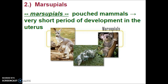Marsupials and monotremes are mostly found in the southern continents of Australia and the island of New Zealand. These branches of mammals became separated once we had some continental shift, and the only American marsupial mammal is the possum — the only one that made it far enough when the continent split to be found in North America.